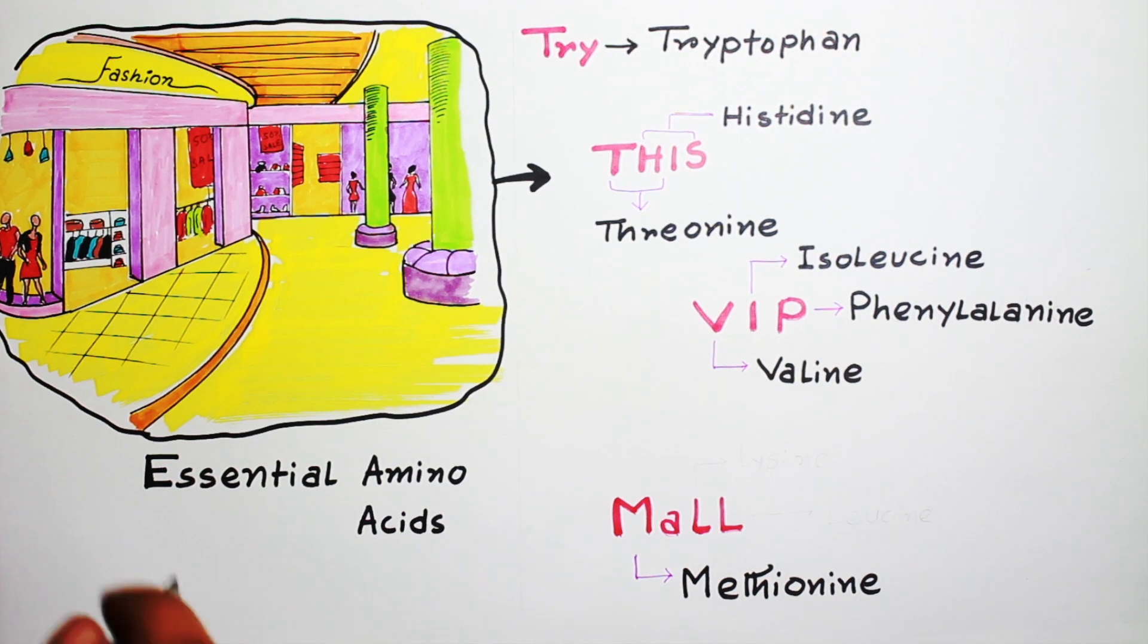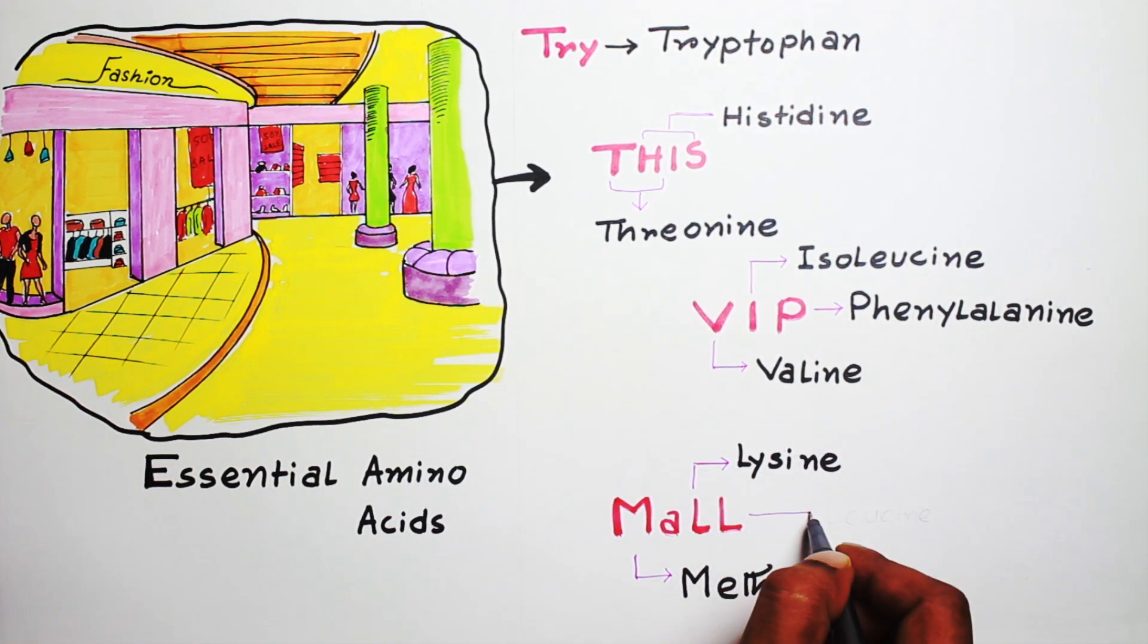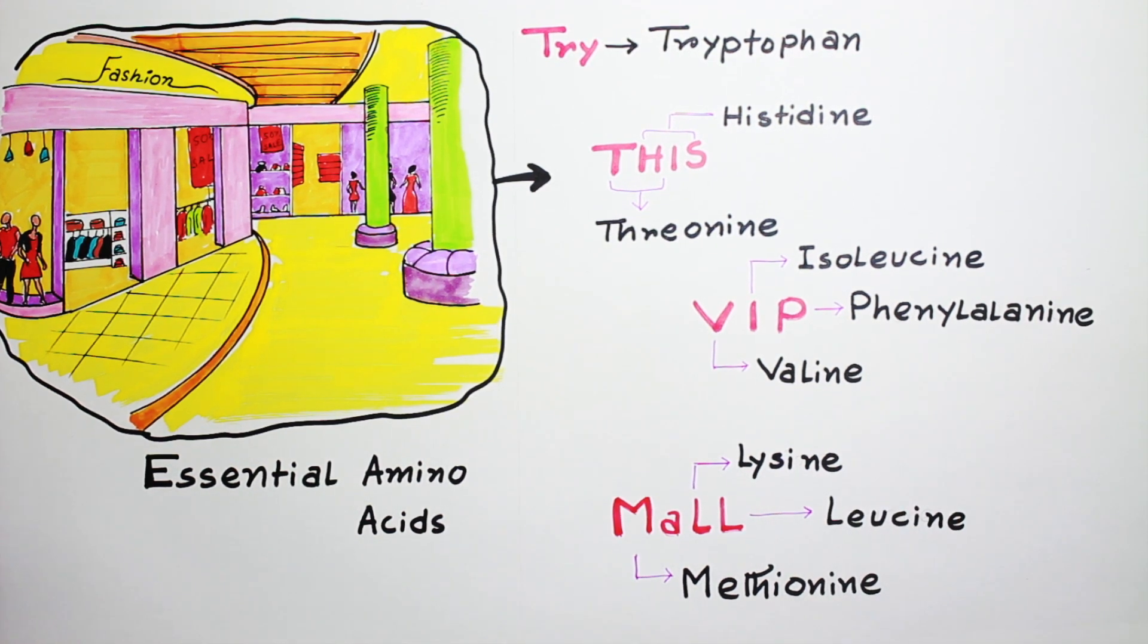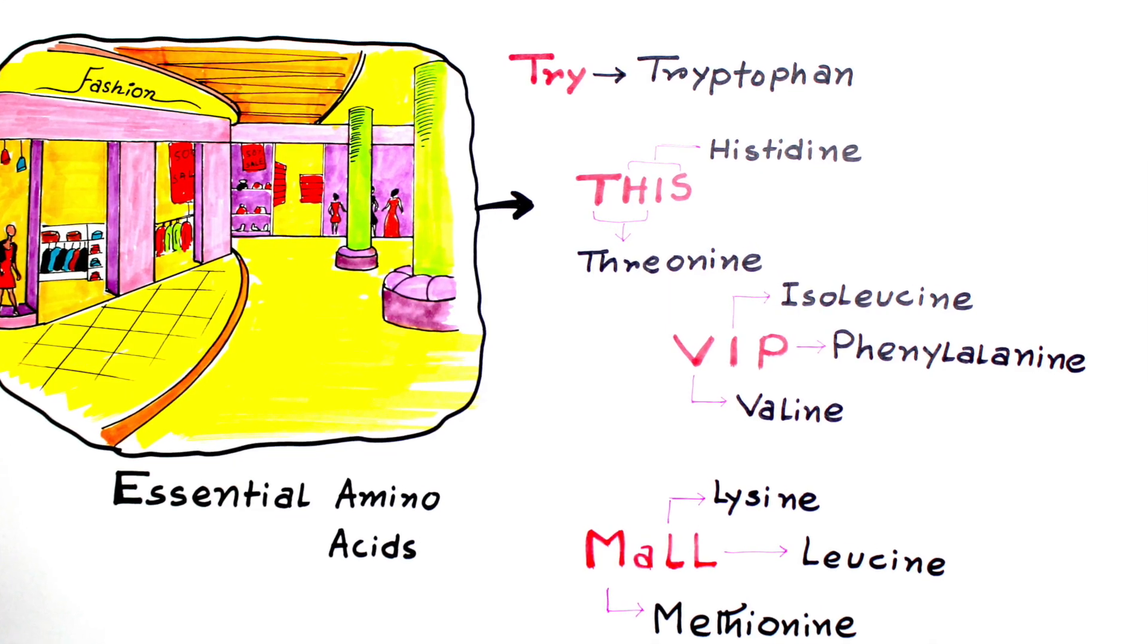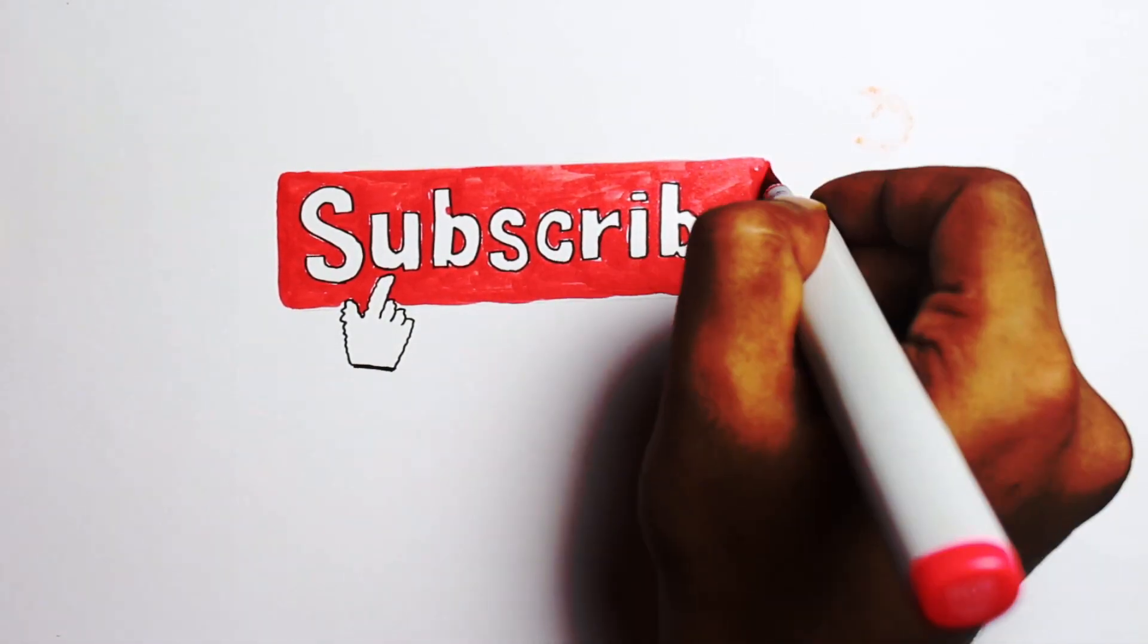Then there are two L's. First 'L' represents lysine, and second 'L' represents leucine. That's it. That's all, guys. Please subscribe for more videos. It's free for all. Have a nice day.